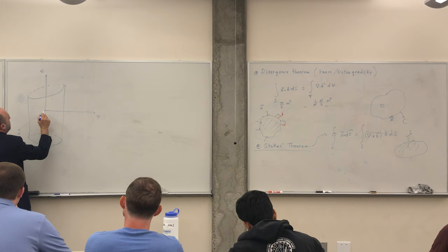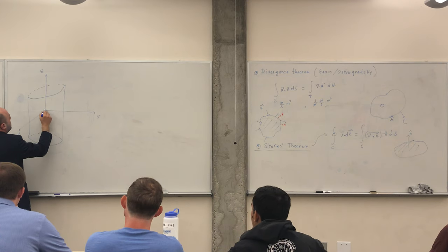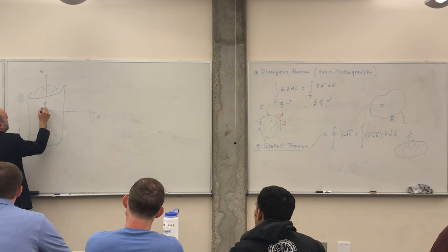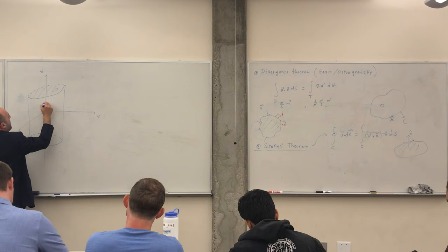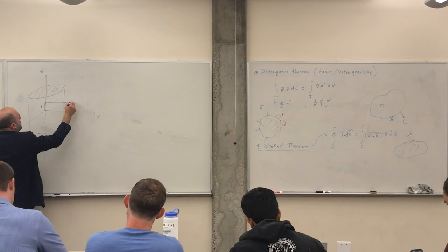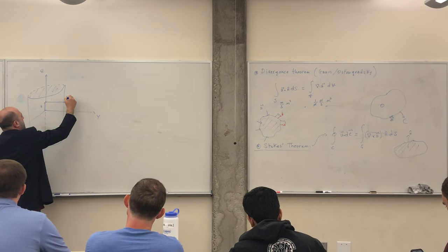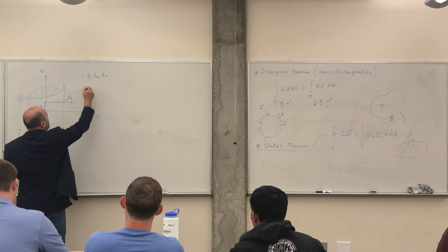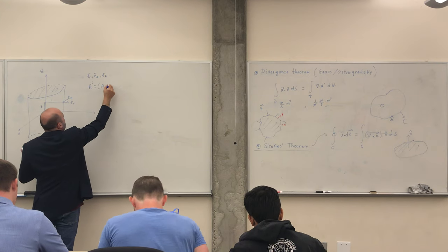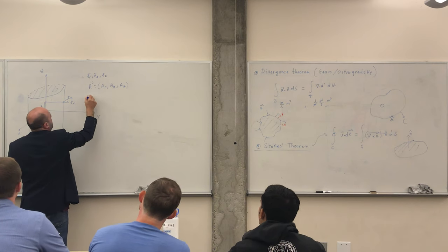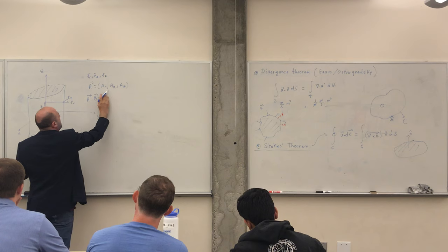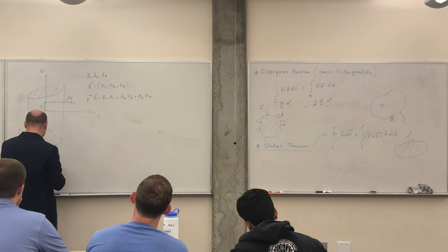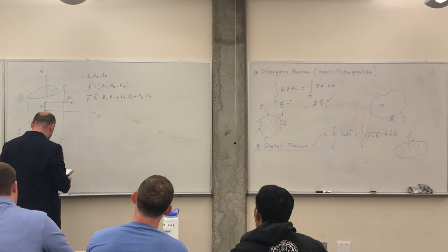In cylindrical coordinates, you have elevation z, giving the z-component; a radial vector giving e_r; and a tangential vector e_theta. The basis vectors are e_r, e_theta, and e_z. Any vector in cylindrical coordinates is written as a_r e_r + a_theta e_theta + a_z e_z. The dot product and cross product formulas remain structurally the same.